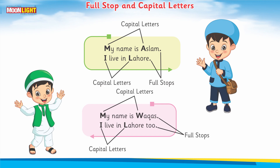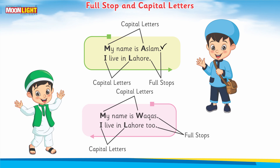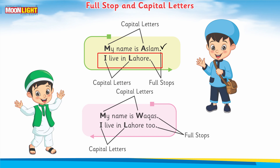You can see here that there are two boys — one is Asnam and the other is Vakas — and they are talking to each other. Asnam is saying 'My name is Asnam.' He writes M in capital, and when he uses his name, he writes A in capital. After finishing his sentence, he puts a full stop. Then he says 'I live in Lahore' — writing I in capital and L of Lahore in capital — then puts a full stop.